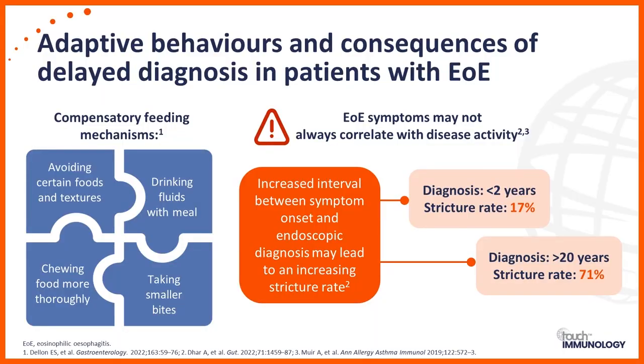Delayed diagnosis is important because if left too long, the eosinophilic inflammation can cause scar tissue or fibrosis, narrowing the oesophagus. This won't resolve without an invasive procedure — balloon dilatation — which we want to avoid. If diagnosed early, within two years from onset of symptoms, the risk of stricture formation is about 17%. If left for around 20 years, that rises to over 70%. Often it's not until a food bolus obstruction occurs that patients present to the medical department and the diagnosis is finally made.